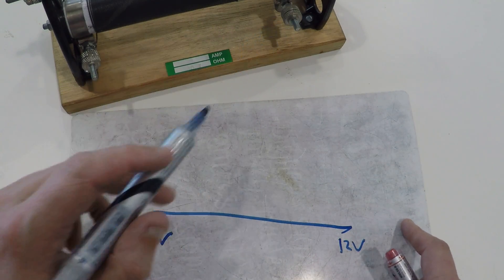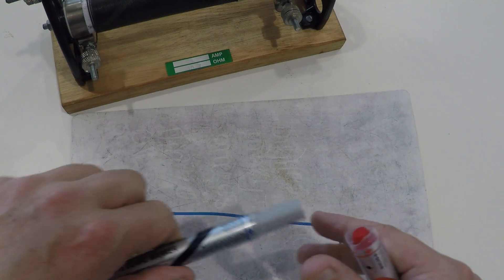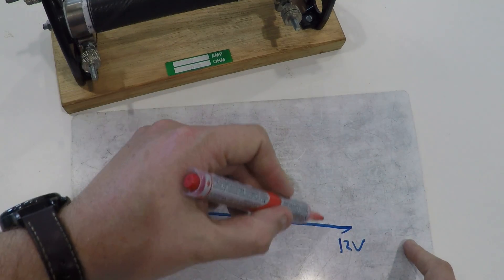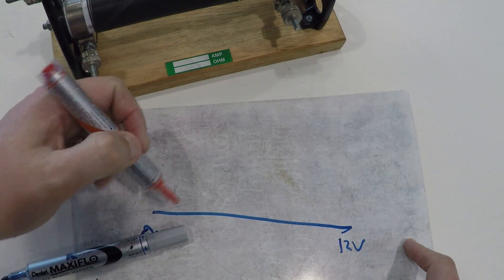So from here to here, this is zero volts, this is 12 volts. Now wherever I move my slider, I can choose between 12 to zero volts.